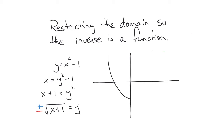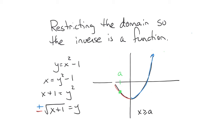Here's my parabola. I'm going to restrict the domain by picking a point A. I can pick any x value I want along the function. When I do, that breaks the graph into two intervals: values to the left of A and values to the right of A. I'm going to look at values where x is greater than or equal to A, so I'm looking at just this right portion of the graph, getting rid of everything to the left of A.